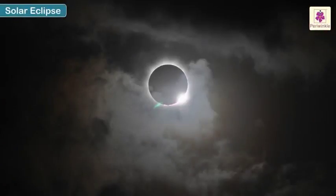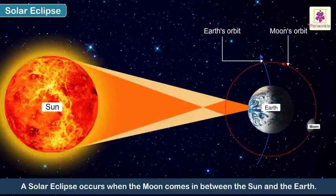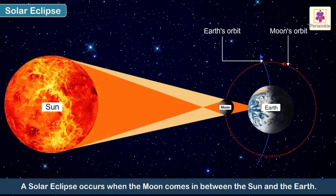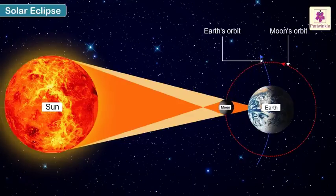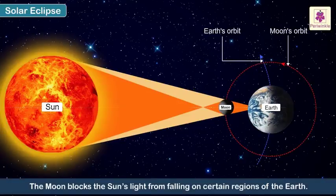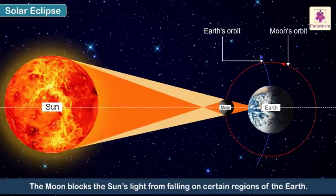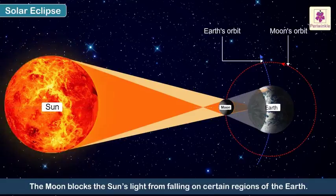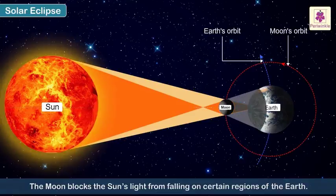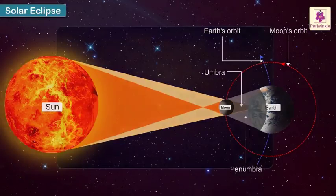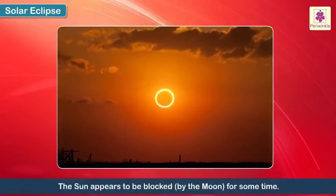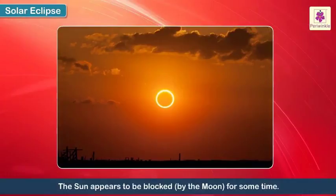Solar Eclipse. A solar eclipse occurs when the Moon comes in between the Sun and the Earth. As a result, the Moon blocks the Sun's light from falling on certain regions of the Earth. For the people in these regions, the Sun appears to be blocked by the Moon for some time. This is called a solar eclipse.